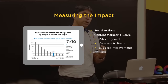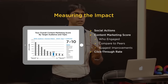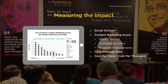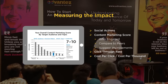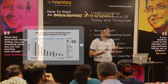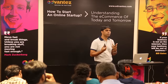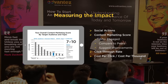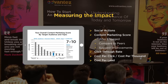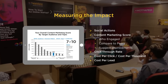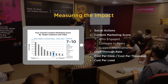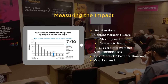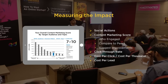Then you have your click-through rates — how many people click through. You have your cost per click and your cost per thousand (CPM). If you're paying by click, track cost per click; if paying by CPM, track cost per thousand. And lastly, what's your cost per lead? Very similar to every other platform — the only unique metric here is the content marketing score, which doesn't exist on other platforms.